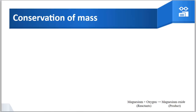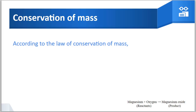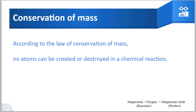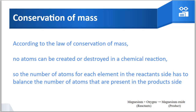Let us recall the law of conservation of mass that you studied in Class 9. According to this law, no atoms can be created or destroyed in a chemical reaction. So the number of atoms for each element on the reactants side has to balance the number of atoms present on the products side. Here, the word equation is written: magnesium plus oxygen gives magnesium oxide — reactants and products — and the number of atoms of each element in the reactants must balance those in the products.